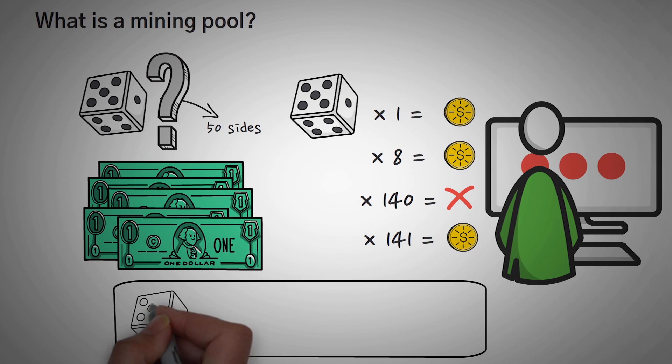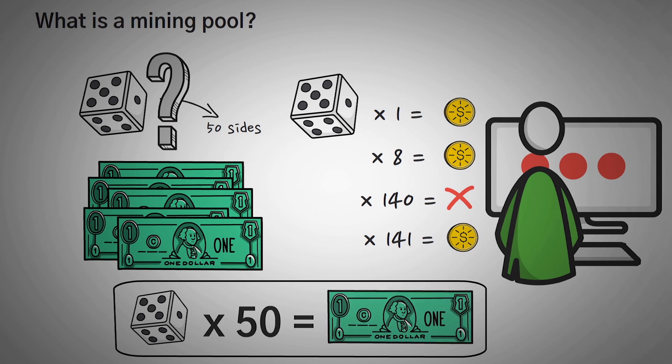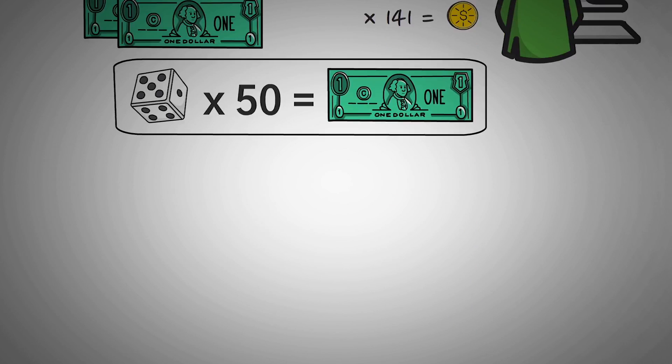So basically using statistics, we can say that roughly every 50 times you roll it, you will win $1. But sometimes it might take you eight rolls, and sometimes it might take you 140 rolls.